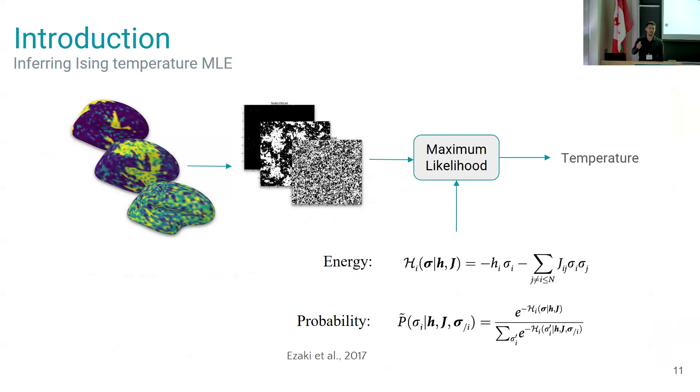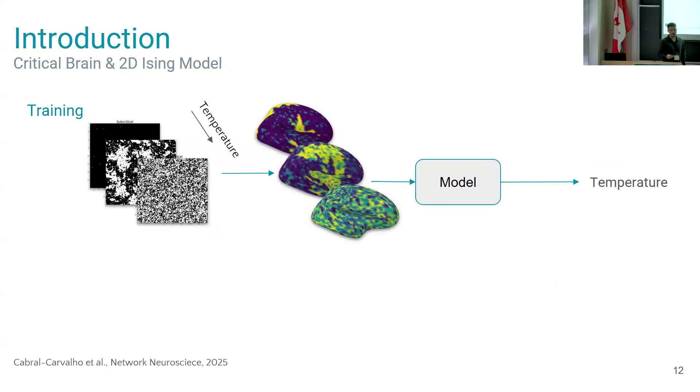So I need to develop a different kind of model, a model that I can simulate the 2D Ising model, map them into the brain, and then use a machine learning model to estimate the temperature. The idea is that if I can simulate the Ising model, I can create a really big deep learning model to estimate the temperature of the 2D Ising model.